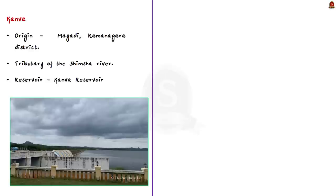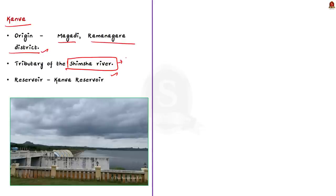Moving on to the last river, Kanwa. The river originates in Magadi, which is in Ramanagara district. This river is a tributary of the Shimsha River, and the Shimsha River is a left-bank tributary of Kaveri. The Kanwa reservoir is built across the Kanwa River to meet the irrigation needs of the surrounding area. Due to the Bengaluru rains, all three rivers have been rejuvenated and that is why they are in news today.